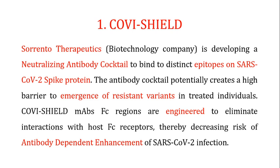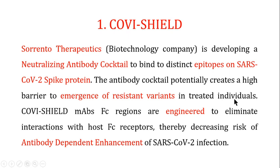One antibody currently in trials is known as COVI-SHIELD, developed by the biotechnology company Sorrento Therapeutics. They have developed a neutralizing antibody cocktail that binds to distant epitopes on the COVID-19 spike proteins. Importantly, this cocktail creates a barrier to the emergence of resistant variants in treated individuals. The Fc regions are so engineered that they do not interact with the Fc receptors of the host, thereby decreasing the risk of antibody dependent enhancement of COVID-19 infection.